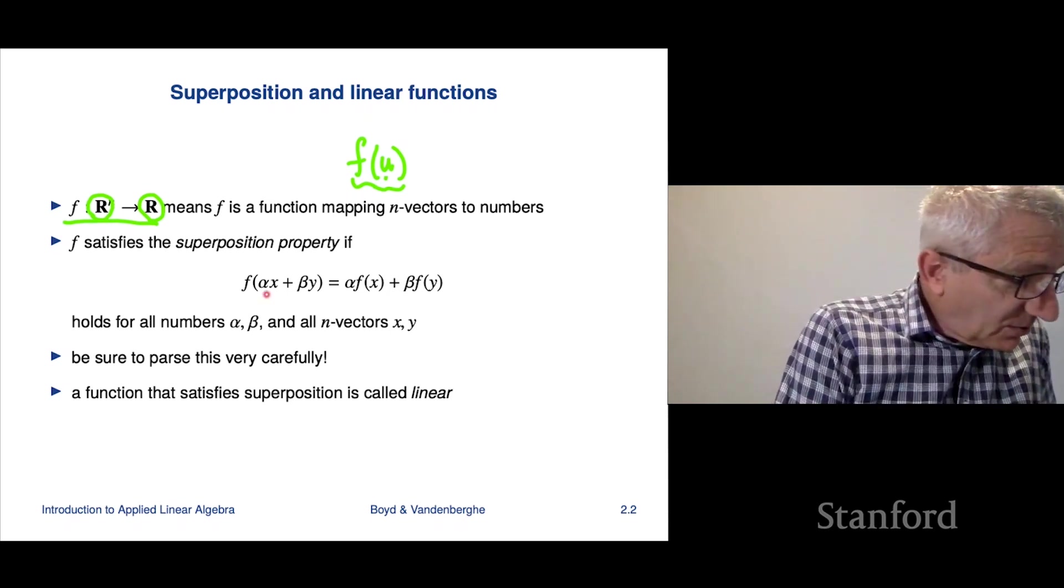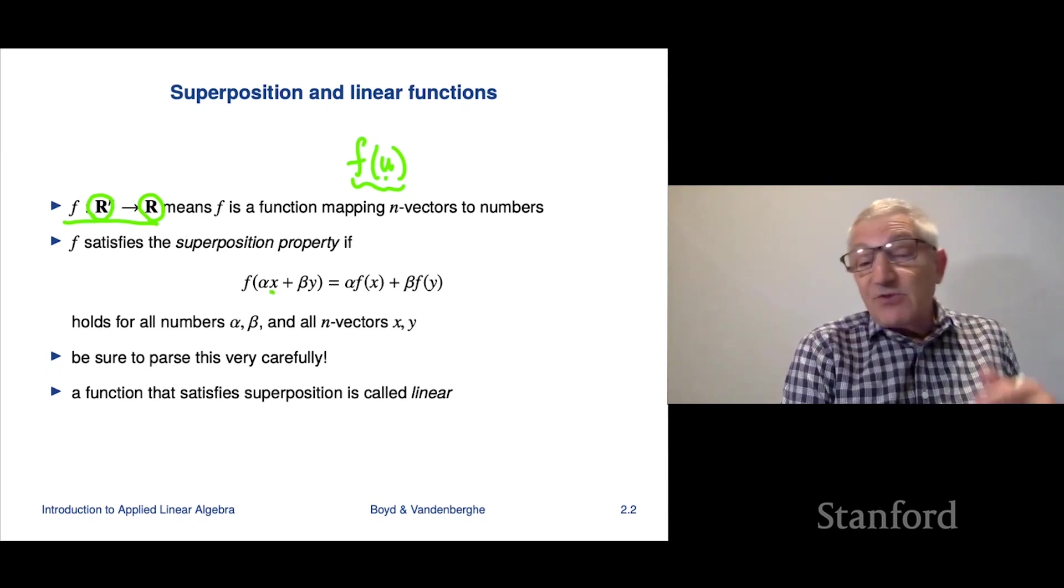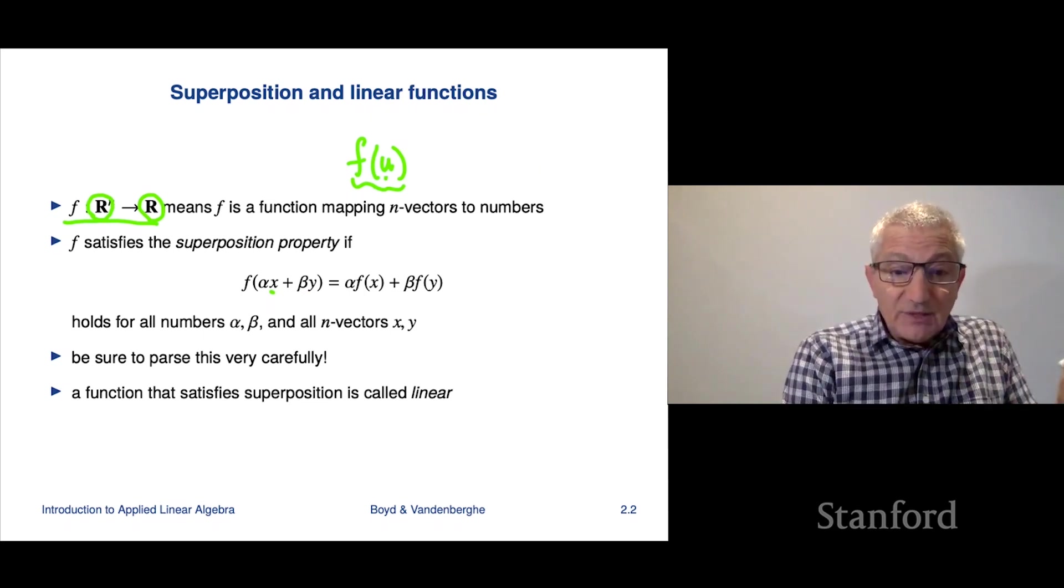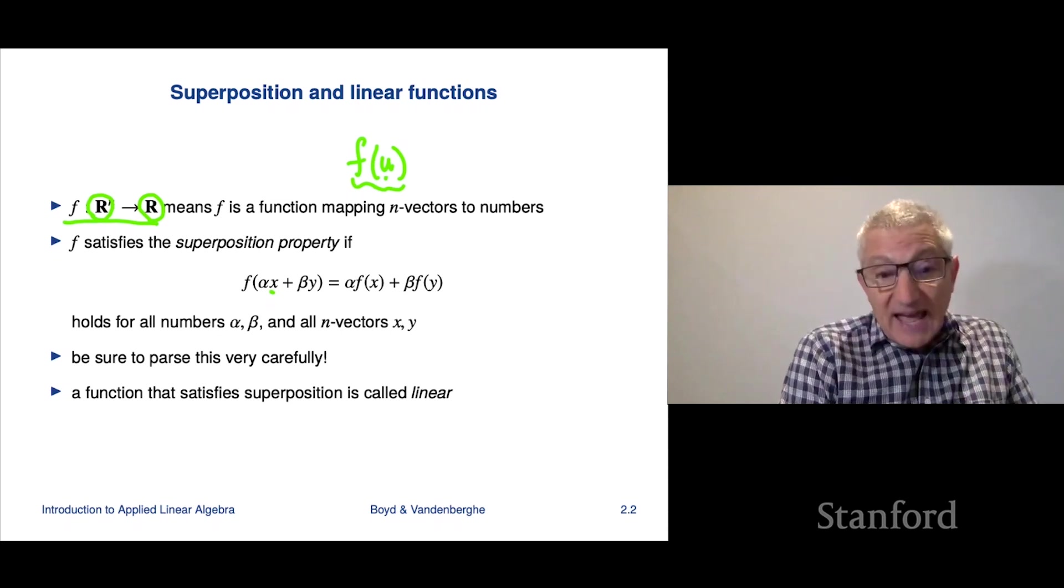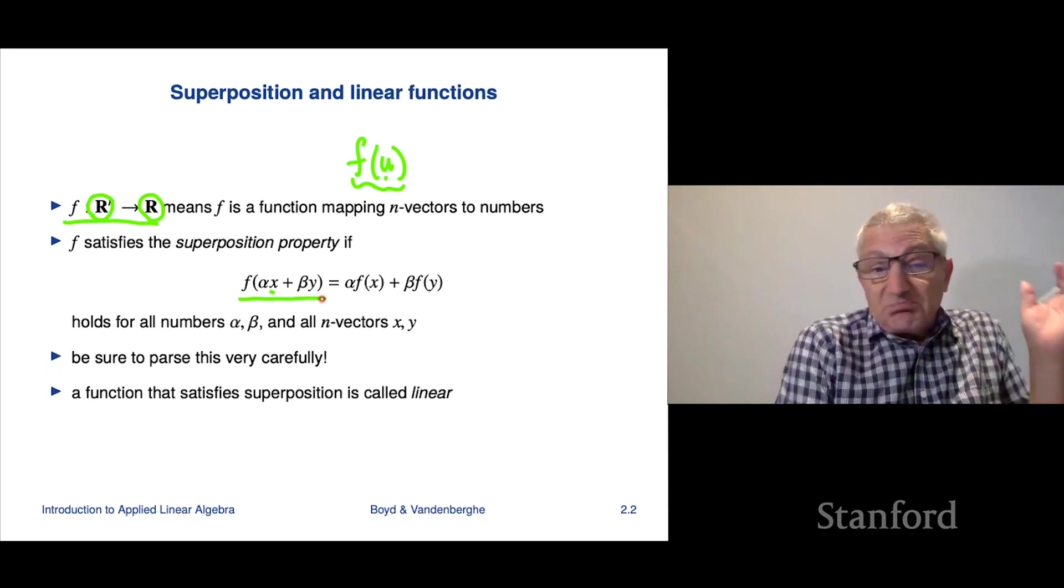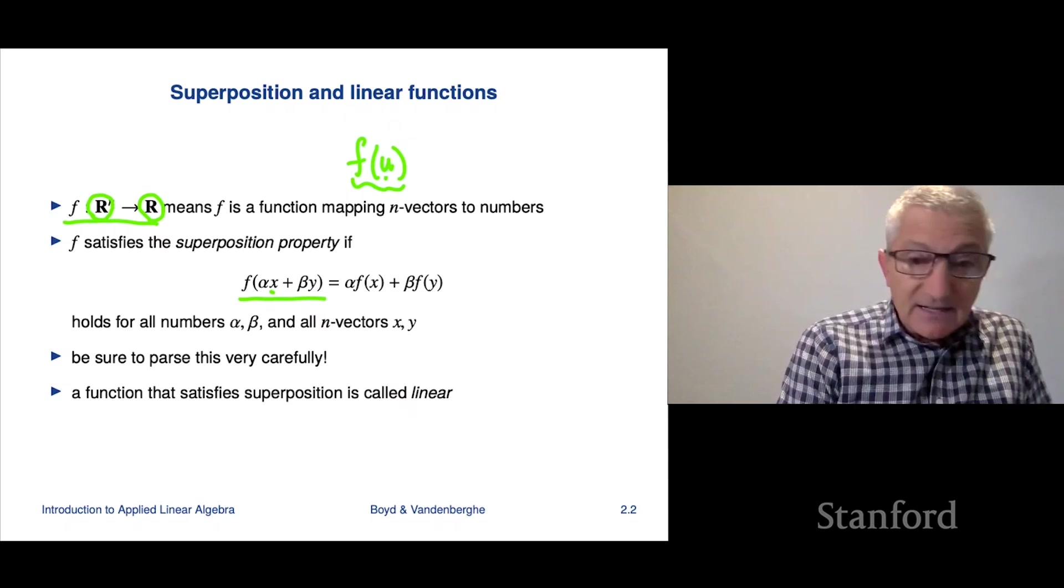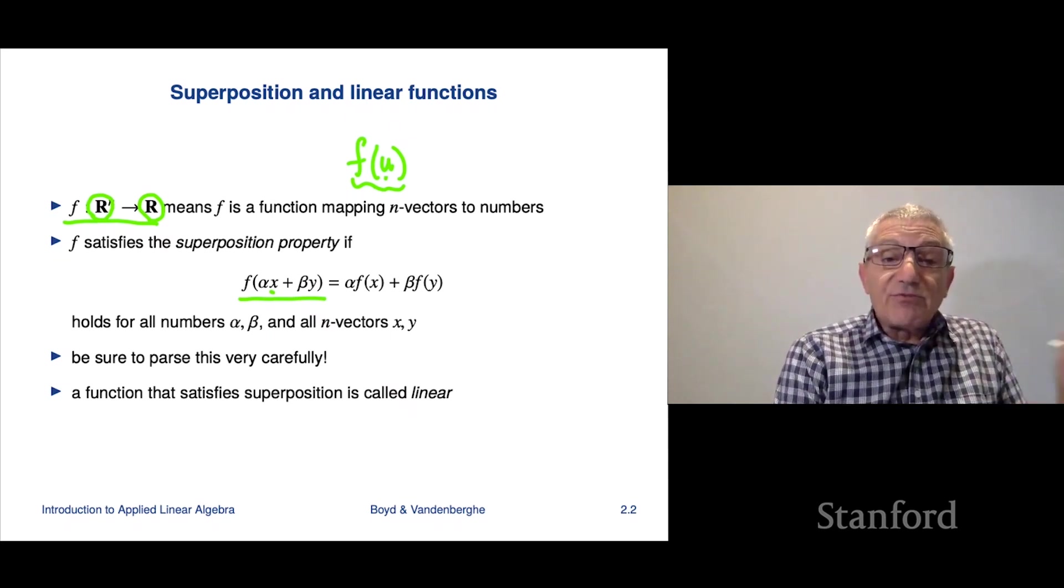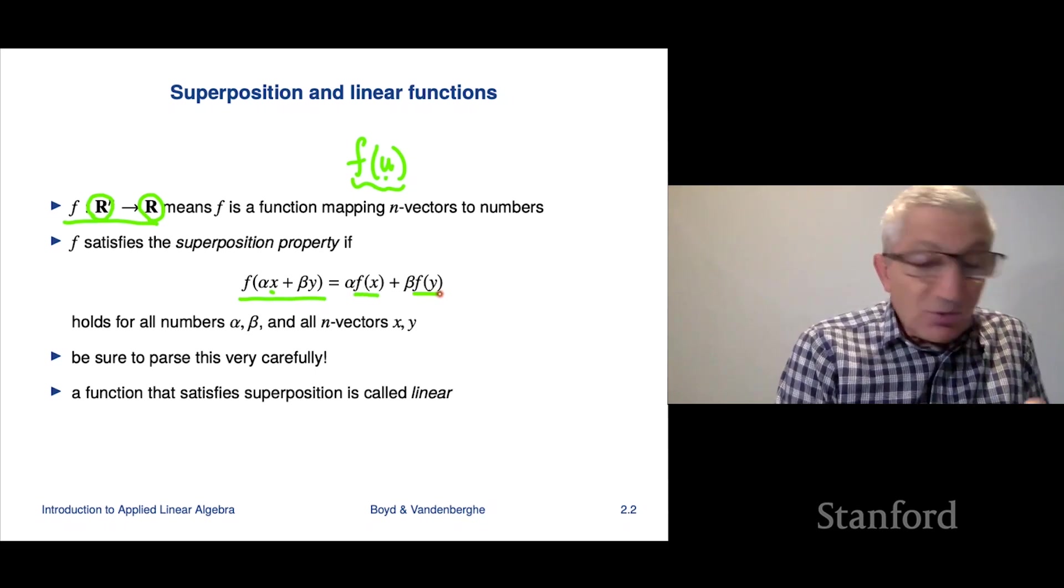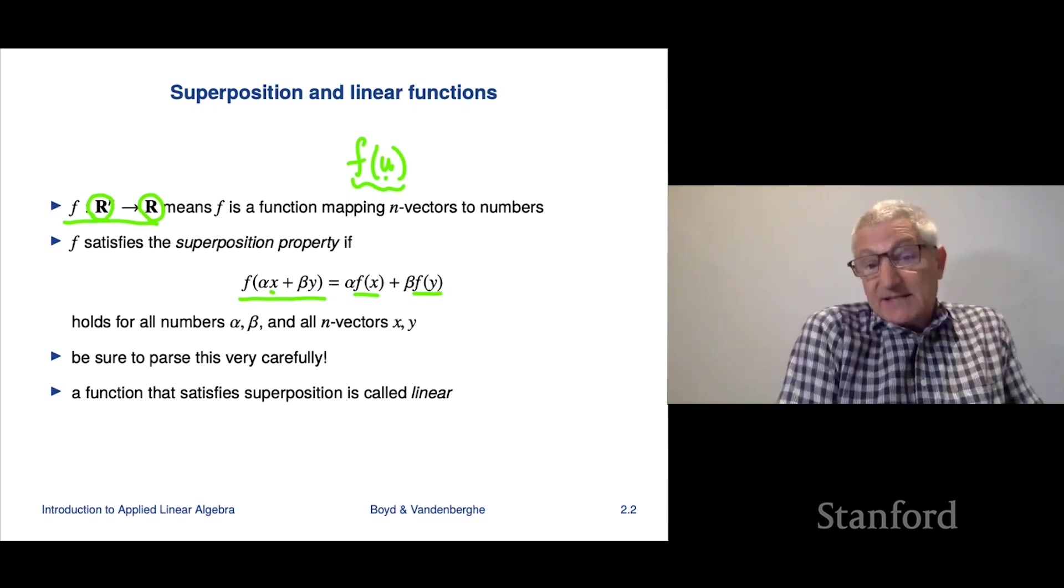Superposition property says, you start with a vector x and a vector y, and you start with two scalars, alpha and beta, and then you form a linear combination. That's alpha x plus beta y. Then it says, after you form linear combination, you apply f. And so you get f of alpha x plus beta y, and this whole left-hand side is a number.